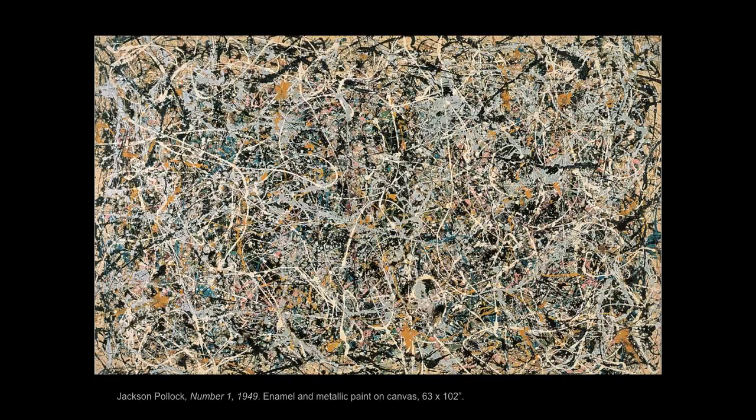He used sticks as well as brushes to drip and pour paint onto the canvas. In 1949, he was featured on Life magazine with the caption, 'Is he the greatest living painter in the U.S.?' This painting, titled Number One, made in 1949, is an enormous scale, being 63 by 102 inches — a radical change in what painting is or could be.